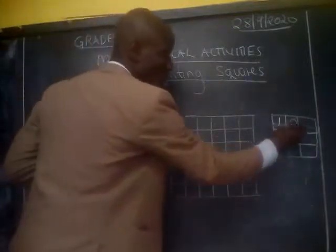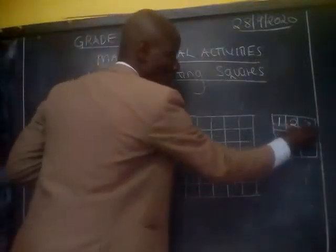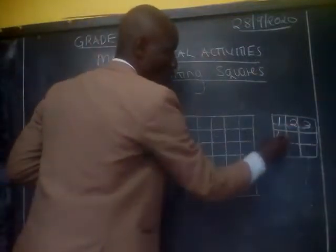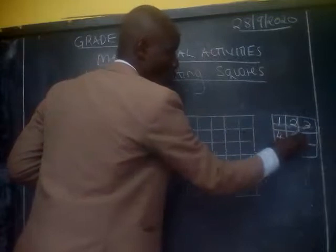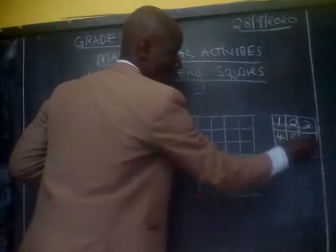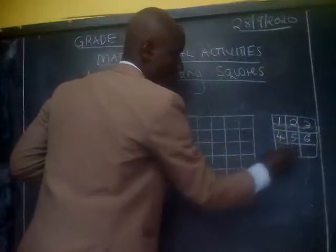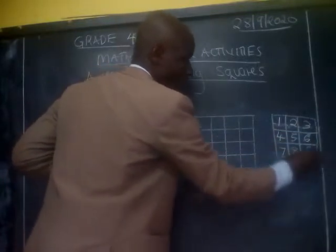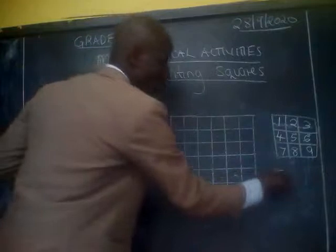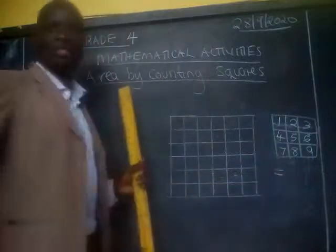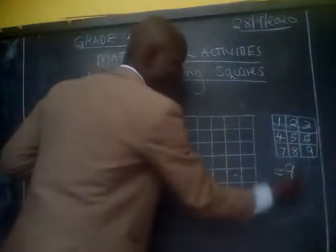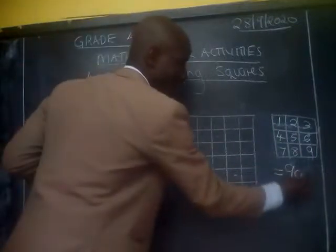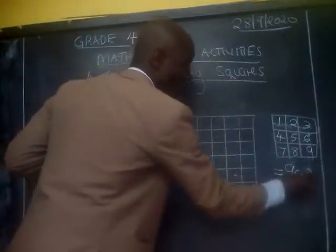We count: one, two, three, four, five, six, seven, eight, nine. That gives us the area. The area of that square would be nine centimeters square.